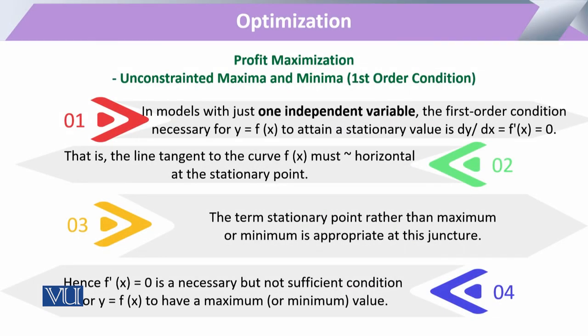In this profit maximization model, we will take examples of three aspects: one case with only one independent variable, a case with two independent variables, and then we will extend to the n-variable case. When we have only one variable utilized for production, as per the first order condition — necessary for optimization — we optimize output y with respect to x. This is attained through a stationary value: the change in y with respect to x, its first derivative, must be equal to zero.